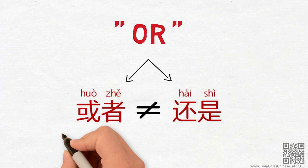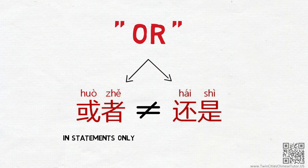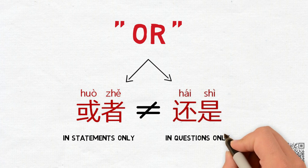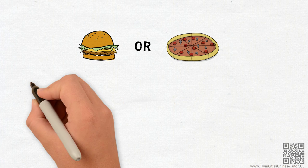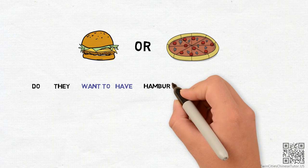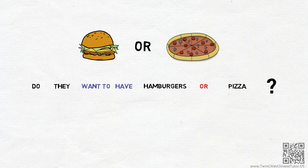As OR, 或者 should only be used in statements, while 还是 should only be used in questions. So in our case, if you want to ask the question, Do they want to have hamburgers or pizza? We will use the question word 还是 to express OR. This question will be built as, They want to have hamburgers 还是 pizza?